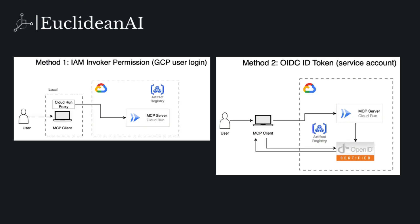Let's look at how to deploy a remote MCP server on GCP following Google's official guide. GCP offers a simple, cost-effective, and developer-friendly way to host MCP servers, ideal for individuals and small teams. With Cloud Run, you can deploy a containerized MCP server with minimal setup, automatic scaling, and built-in authentication. First, you store your MCP server Docker image in Artifact Registry. Then you deploy your MCP server as a fully managed containerized service. Cloud Run handles scaling, HTTPS, and networking for you.